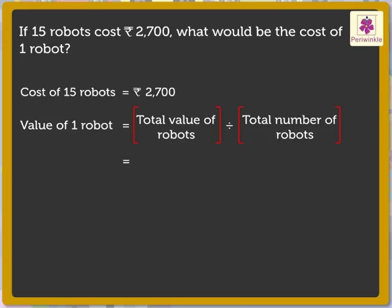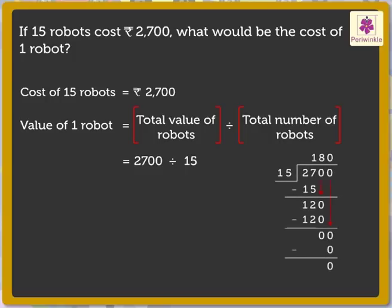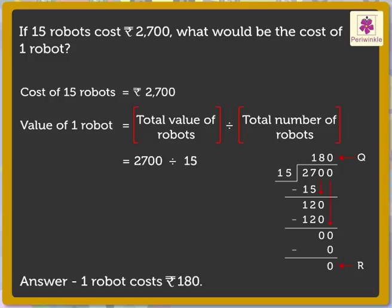So, here we divide 2,700 by 15 to get the value of one robot. Let us do the division. The answer we get is 180 and the remainder is 0. Thus, one robot costs 180 rupees.